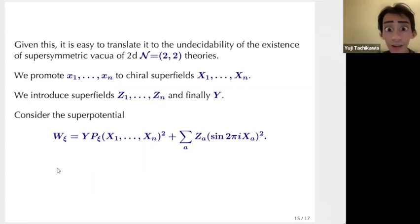Given this result about Diophantine equation, it is easy to translate it to the undecidability of the existence of supersymmetric vacua of two-dimensional N=(2,2) theories. So let's do the following. We promote the unknowns x1 to xn to chiral superfields X1 to Xn and we introduce superfields Z1 to Zn and finally one additional superfield Y and you consider the following superpotential. You have Y times the polynomial P_ξ(Xi) and you take the square and you consider sum over all variables such that you multiply Za times sine of 2πrXa squared.